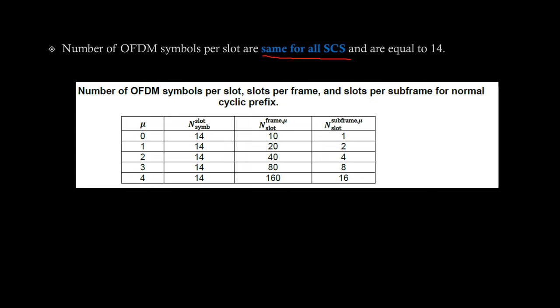Now, coming to symbols and slots. Number of OFDM symbols per slot are same for all subcarrier spacings and are equal to 14. Here you should focus on this highlighted point that number of symbols per slot are fixed or same for all subcarrier spacings. As you can see in the table that for all numerologies number of symbols in a slot are equal.